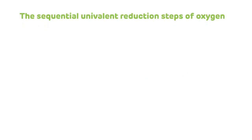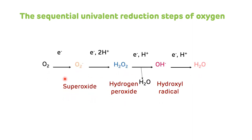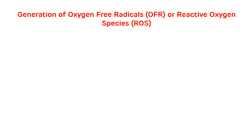Now we will see the sequential univalent reduction steps of oxygen. This picture shows the sequential univalent reduction of oxygen. After the complete reduction process, oxygen is converted to a water molecule. If there is an incomplete reduction process, it leads to the synthesis of various free radicals and reactive oxygen species like superoxide, hydrogen peroxide, and hydroxyl radical.